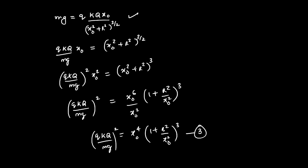There are two unknowns and we need to solve for q, so we cannot solve for q with this information alone — one equation, two unknowns. The way out is to think about the oscillation condition.